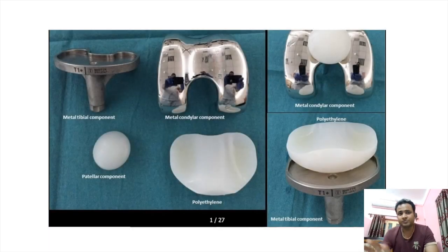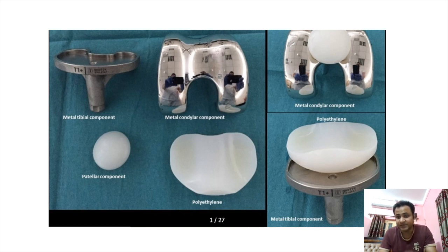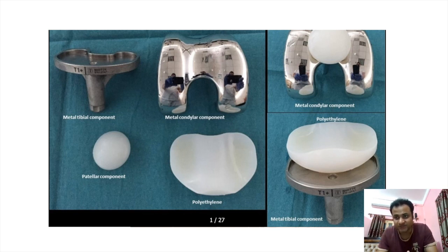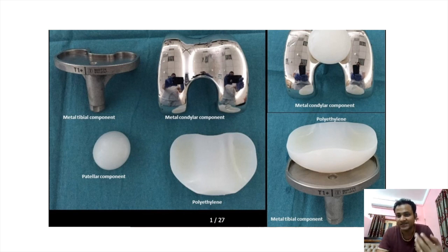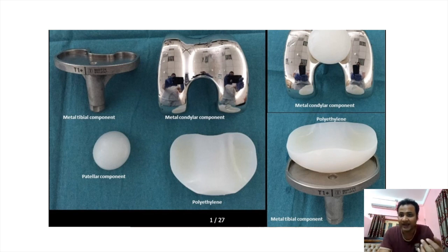Coming back to the hardware components: for the knee prosthesis we have the metal tibial component, the patellar component, the polyethylene liner placed inside the metal tibial component, and the metal condylar component placed in the femur. From a radiologist's perspective, the focus will mainly be on imaging and interpretation — how these prostheses can be evaluated when a patient presents with one.